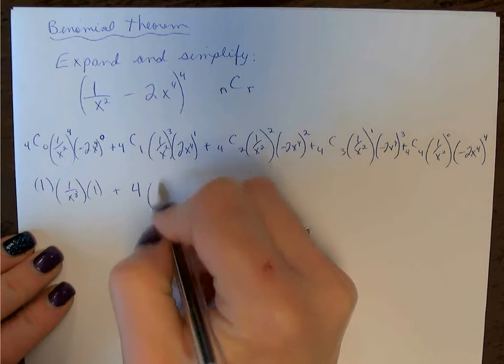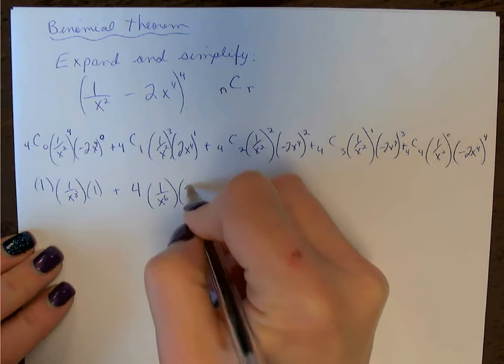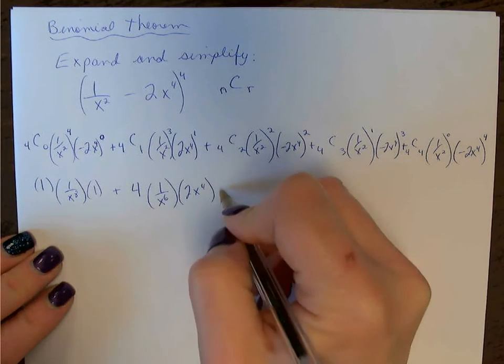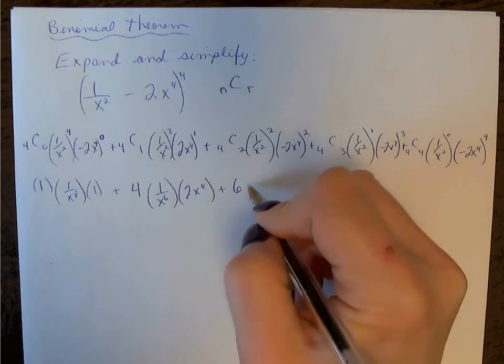so 4, 1 cubed, x to the 6, -2x to the 4. So 4C2, you can use the formula or your calculator to evaluate that to get 6.